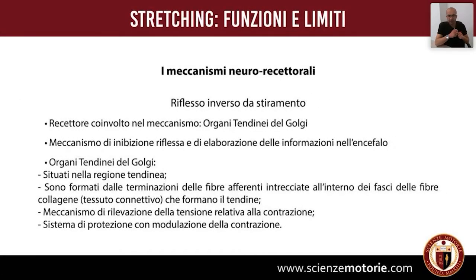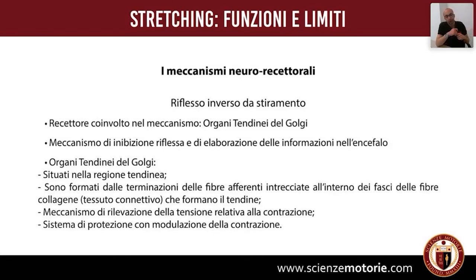Altre strutture coinvolte nel meccanismo di risposta muscolare sono gli organi tendinei del Golgi, che a differenza dei fusi neuromuscolari reagiscono con un riflesso inverso da stiramento: tendono ad avere un riflesso di rilascio, al contrario di quanto comporta la stimolazione del fuso neuromuscolare. Il meccanismo è quello di inibizione riflessa e di elaborazione delle informazioni nell'encefalo.